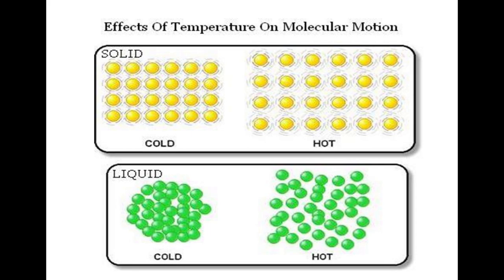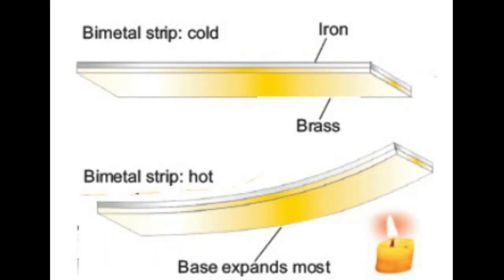Different objects expand and contract at different rates. Liquids and gases expand and contract much more dramatically than solid objects like metals or glass. Thermometers measure temperature based on the expansion or contraction of a liquid, either red-dyed alcohol or mercury. Even though the liquid and the glass tube are at the same temperature, the liquid expands much more than the glass tube.